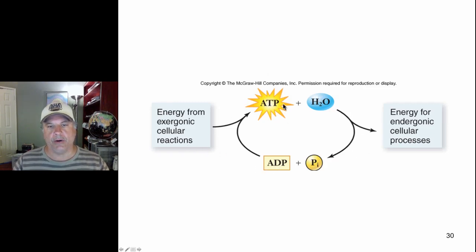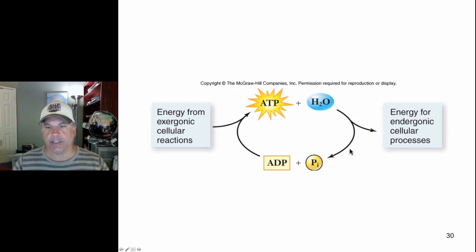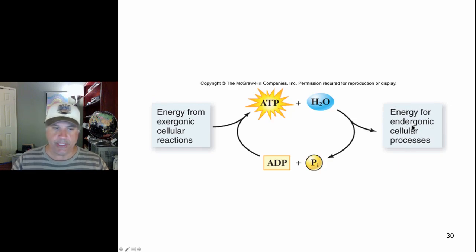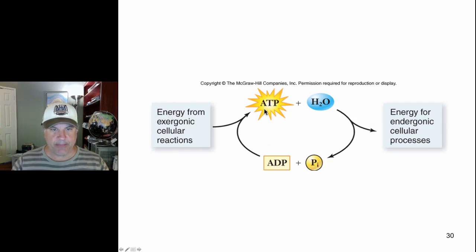If we are hydrolyzing ATP to cause the release of an inorganic phosphate, that releases energy. This is an exergonic reaction where energy is released, and that energy release can be used to fuel endergonic reactions that require energy. For example, energy released from exergonic reactions can add a phosphate to ADP to form ATP — this is an endergonic reaction being fueled by energy from exergonic reactions.